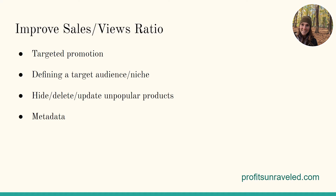So what are some ways we can improve the sales-to-views ratio? One of the big ones is targeted promotion. We need to define our target audience and our niche. If your shop sells everything and anything, it's going to be really hard to target who you're selling to. Create a niche shop, figure out your target audience, and promote to them consistently — that should drive traffic and sales. The other thing we can do is hide, delete, or update unpopular products that aren't getting views. And one last thing is metadata: our SEO, titles, tags, and descriptions. Optimize those because that generates traffic from within the Zazzle marketplace and from search engines like Google, where there's a lot more people searching.